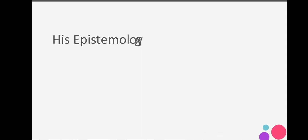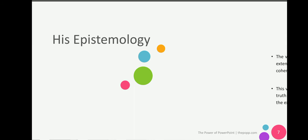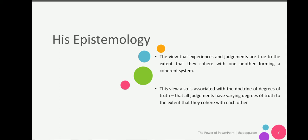His epistemology: He found fault with Kant's view of things in themselves that are beyond the reach of knowledge and proceeded to reject the notion. The general problem is how to distinguish among experiences those which are purely subjective and those really objective. The view that experience and judgment are true to the extent that they cohere with one another, forming a coherent system. This view is also associated with the doctrine of degrees of truth, that all judgments have varying degrees of truth to the extent that they cohere with each other.